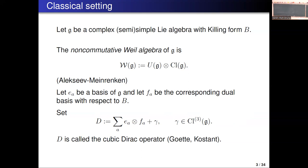This is called the cubic Dirac operator. It was introduced and studied by Goodman and Kostant. It's a little more general: you can have a subalgebra to which this form B restricts non-degenerately, and then you can have some relative version of this cubic Dirac operator, where you sum only over the basis for the complement of the subalgebra.